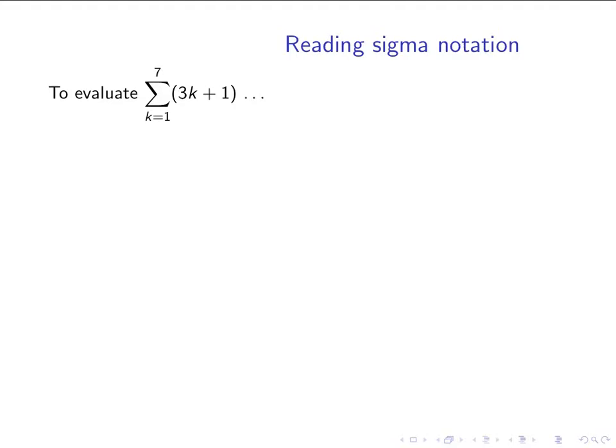In the sigma notation, we have what's called an index. In this case, the index is k, and these numbers, k equals 1 to 7, tells us the smallest value of k and the largest value of k. So this is telling us that the index k is going to be 1, 2, 3, 4, 5, 6, and 7. So we're going to get all seven of those numbers.